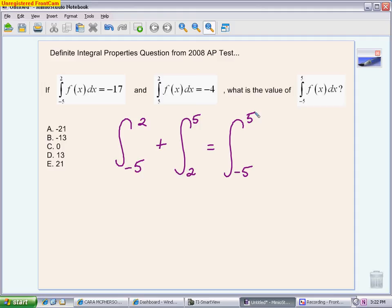So now I just want to plug in what I know. I know that the integral from negative 5 to 2 is negative 17. I know that the integral from 5 to 2 is negative 4. What that means is, if I switch my boundaries, putting them more in the acceptable way with a lower number on the bottom, that I switch the sign of my answer, so this is actually 4.